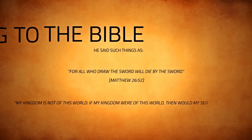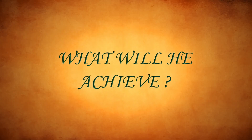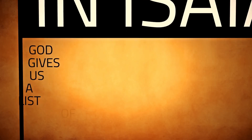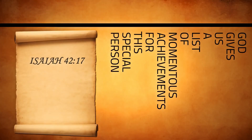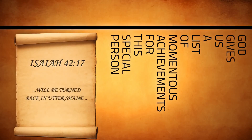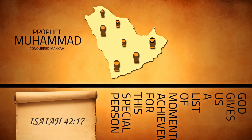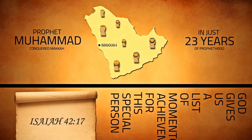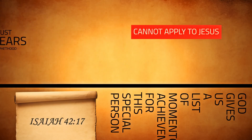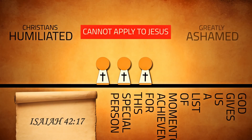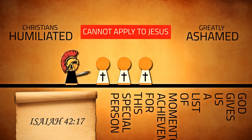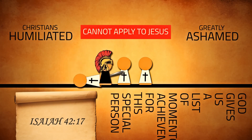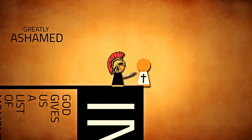If my kingdom were of this world, then would my servants fight? In Isaiah, God gives us a list of momentous achievements for this special person. Chief of these is that the idol worshippers will be turned back in utter shame. Not only did the Prophet Muhammad conquer Mecca, the pagan capital of Arabia, but by the end of his life, in just 23 short years of prophethood, Arabia had shunned idol worship and now worshipped the one true God of Abraham. This cannot apply to Jesus, as it was Christians themselves who were humiliated and greatly ashamed. For hundreds of years after Jesus, they were persecuted at the hands of the Roman Empire, who were idol worshippers. They executed some of the apostles of Jesus such as Peter and Paul, and Christians were tortured and even fed to the lions.